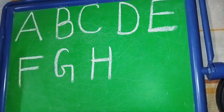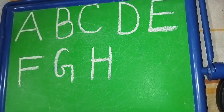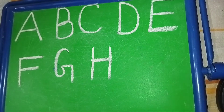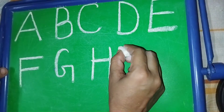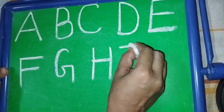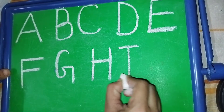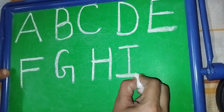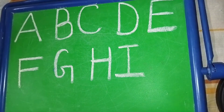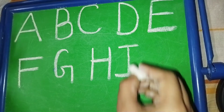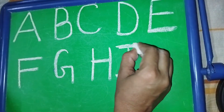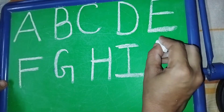H. H for horse. Horse means ghoda. I. I for ink. Ink means shahi.